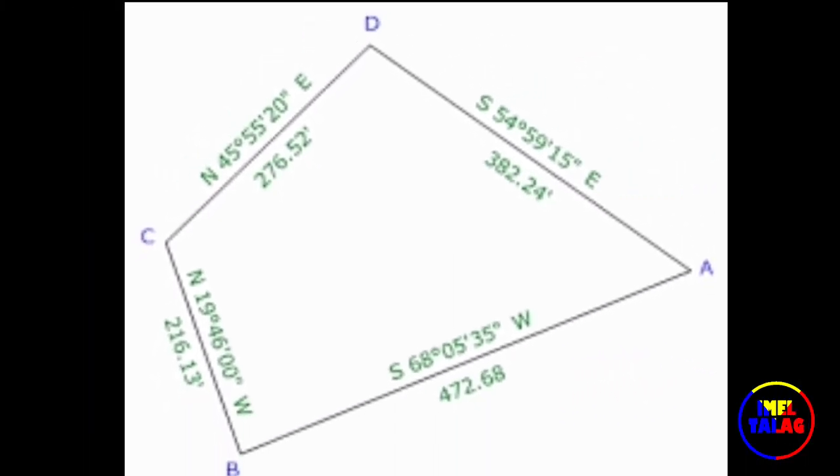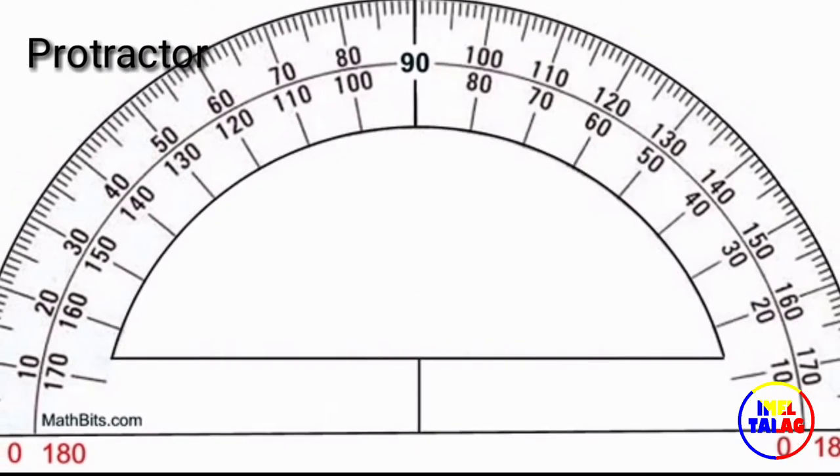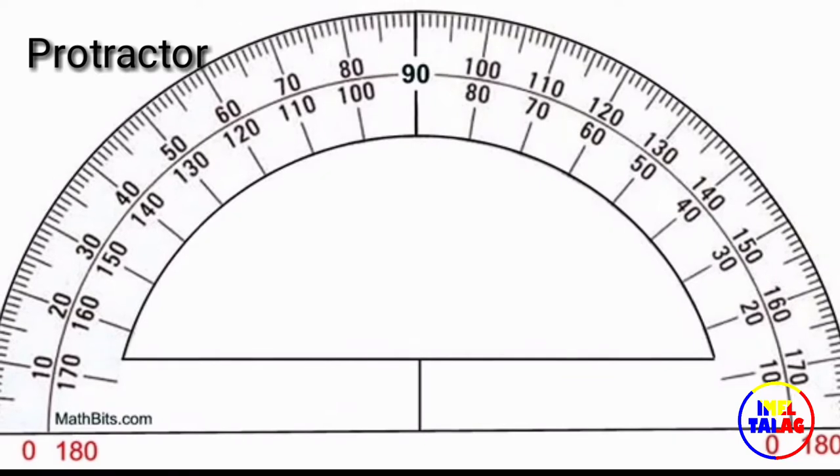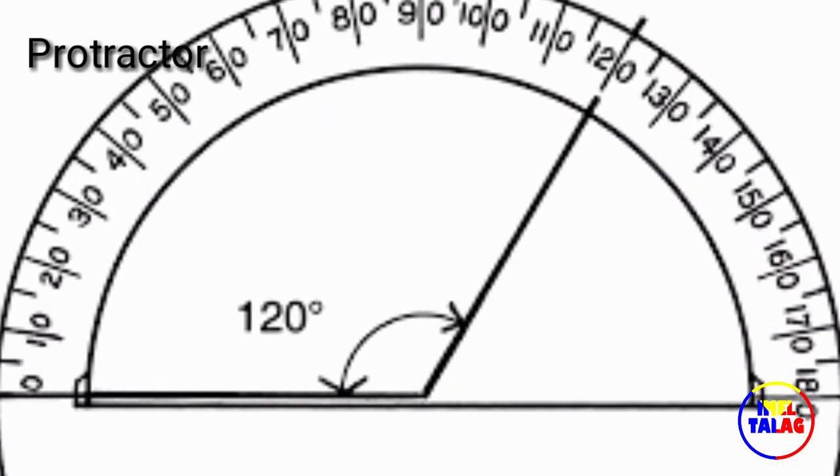The necessary tool used in lot plotting is a protractor. A protractor is a measuring instrument typically made of transparent plastic or glass for measuring angles and degrees.